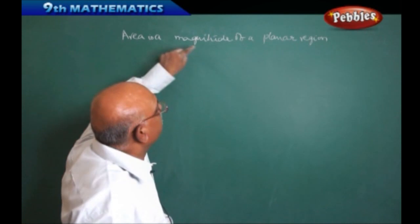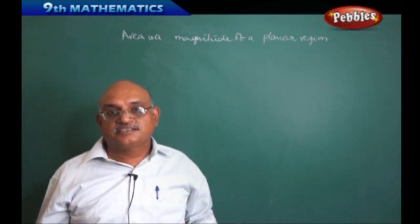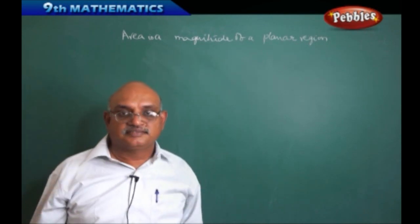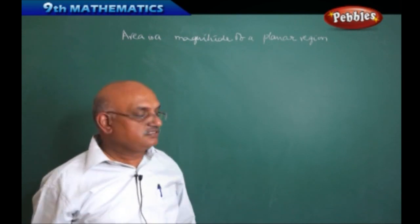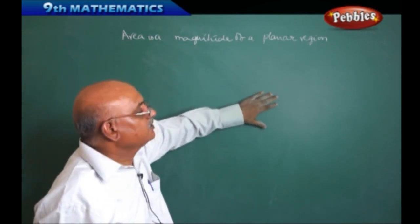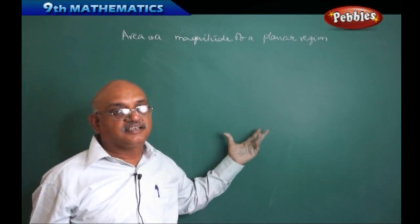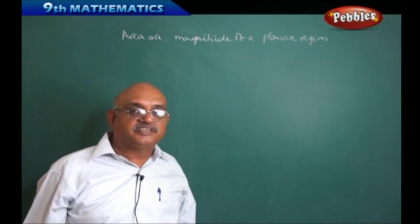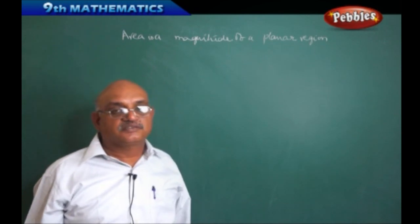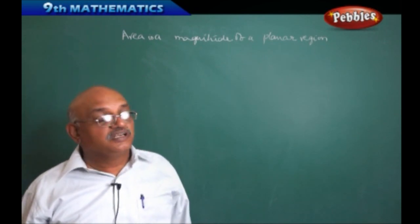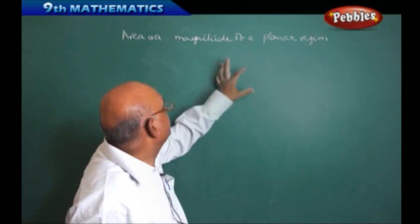Now, area is a magnitude. Magnitude means what? It is a quantifiable quantity. Quantifiable means simply we can see that dimensions and we can measure that this much portion is there. Whatever we are talking about, it is known as quantifiable qualitative product. That is called a magnitude.